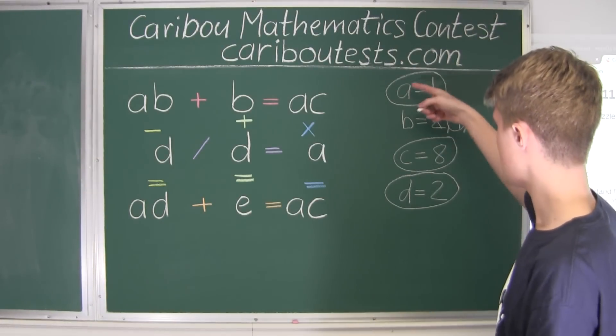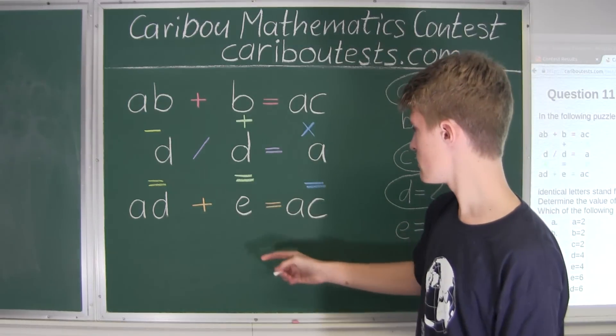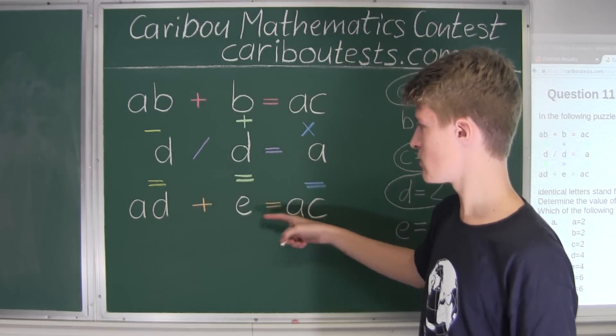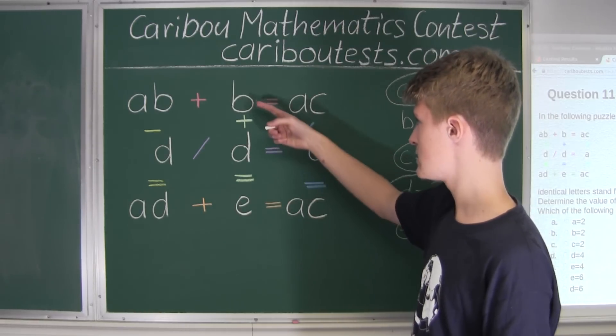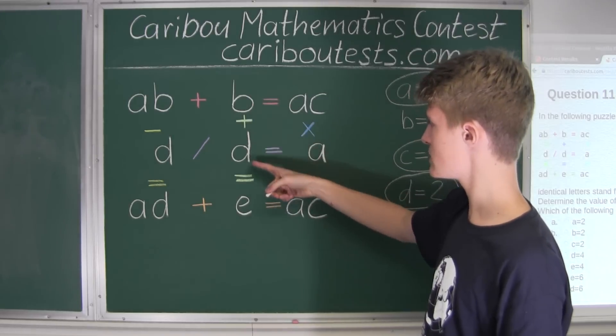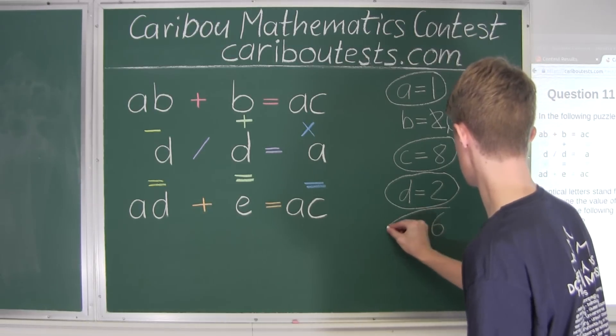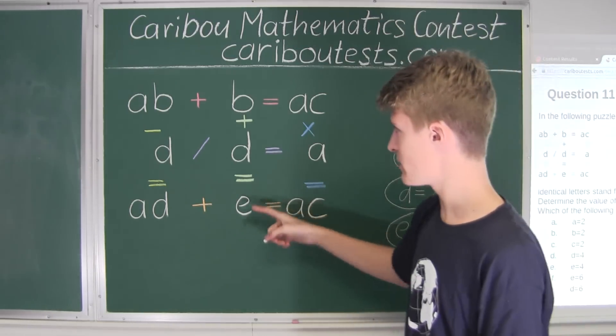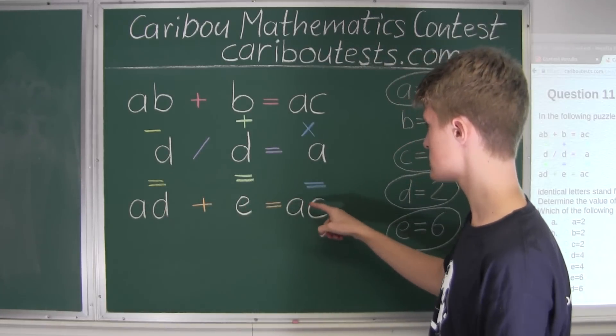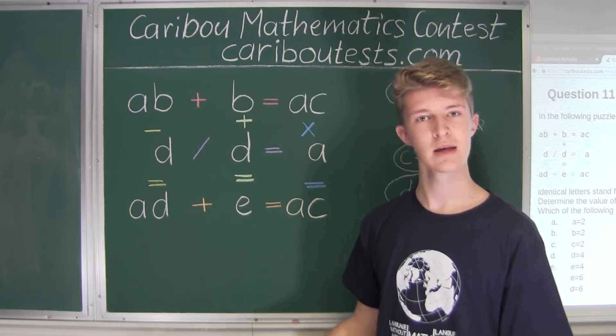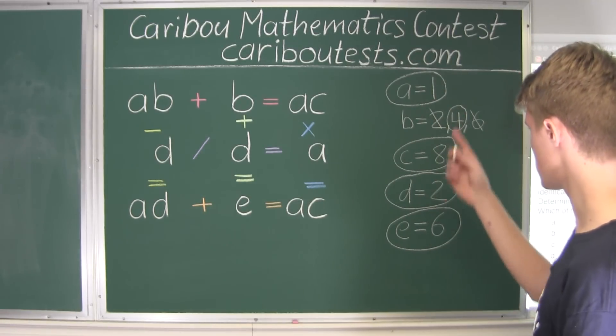And now all we have to find out, we have A, B, C, and D. All we need to figure out is what E is. Well, we have two equations with E, this and this. We already know B and D, and B is 4 plus D is 2, so 4 plus 2 is 6. So E must equal to 6. Now just to prove this, we know that 14 minus 2 is 12, and 12 plus 6 is equal to 18. 18 times 1 is 18. Therefore, everything works, and we know that these values must be correct for the letters.